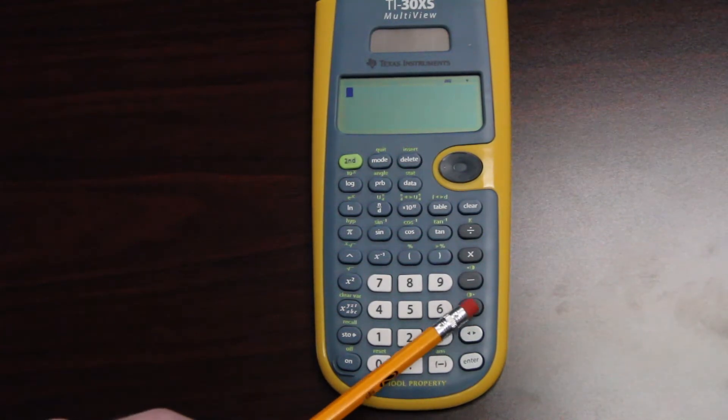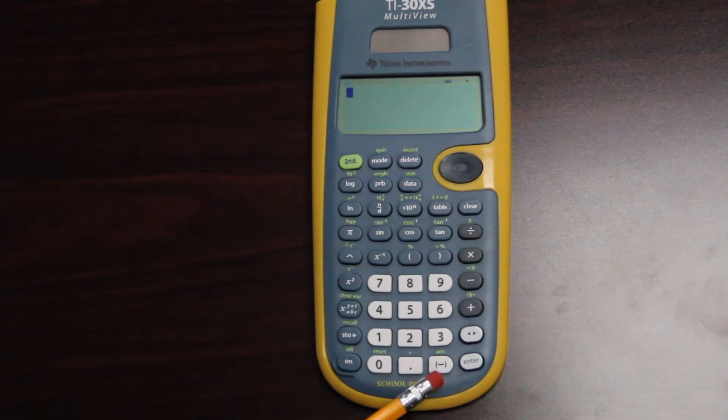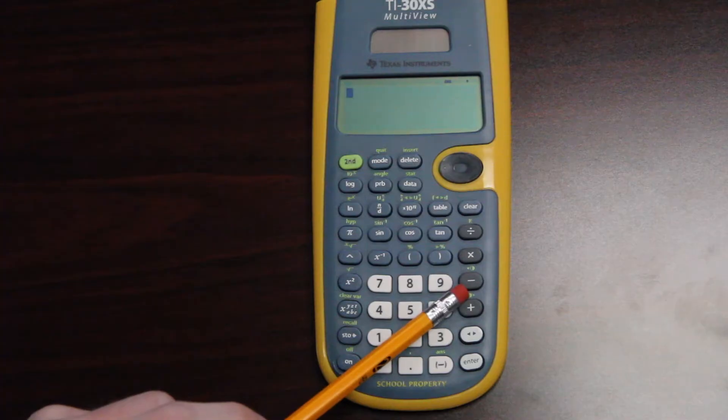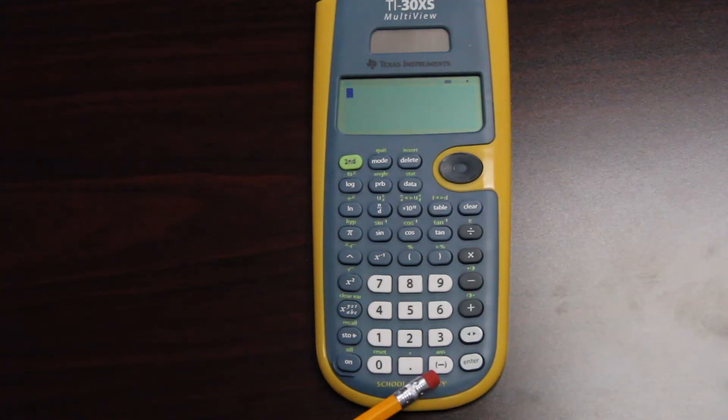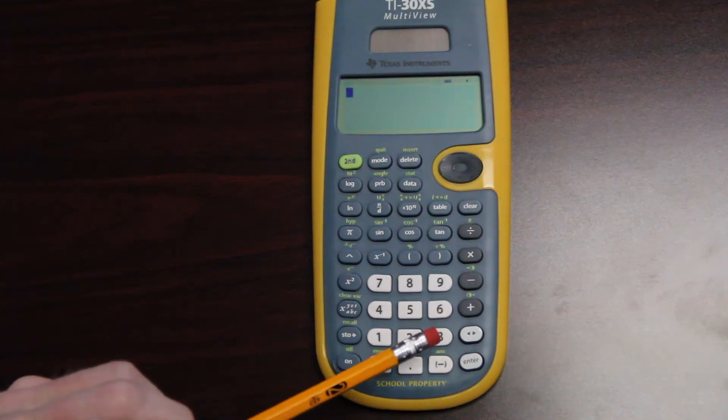Obviously you know you have your plus, your minus, your times, and your divide. You also have a negative sign in your calculator, which is different than the minus sign seen here. The negative sign is when you want to make a number negative. The minus sign is when you want to do subtraction.